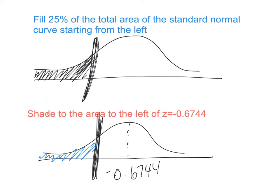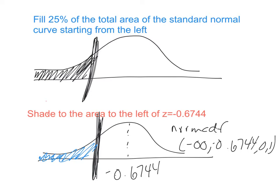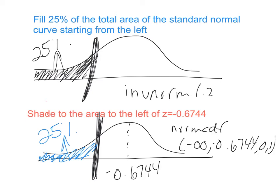Both versions describe the same picture. Using normalcdf from negative infinity up to −0.6744 gives an area of 25% — that's why that z-value was chosen. Conversely, using invNorm with an area of 25% gives the z-score of −0.6744. I could have you draw the same picture using two different descriptors: area as a descriptor, or the critical value of z as a descriptor. Either unit works to describe the normal curve, which is why we have two tests.